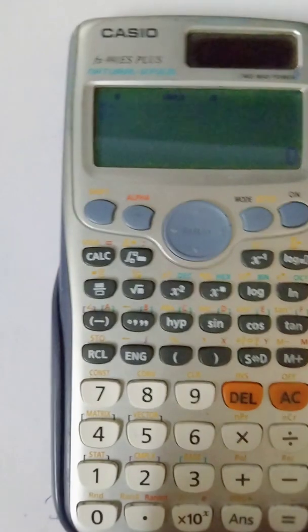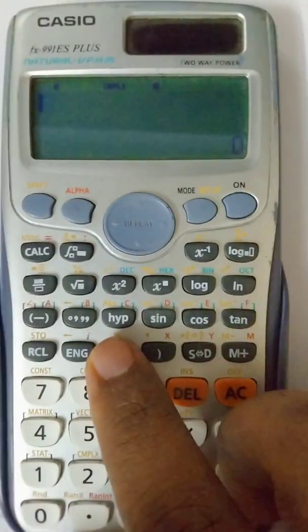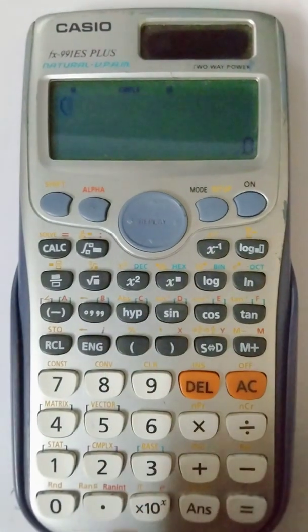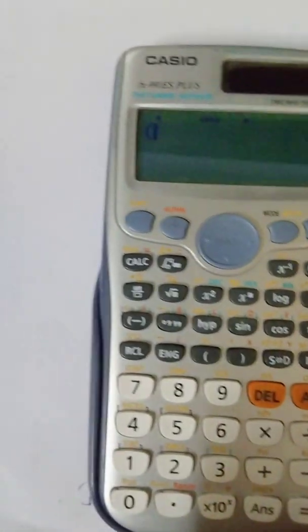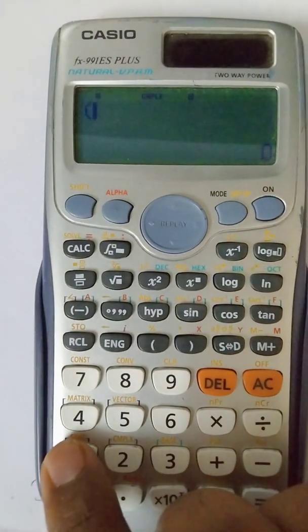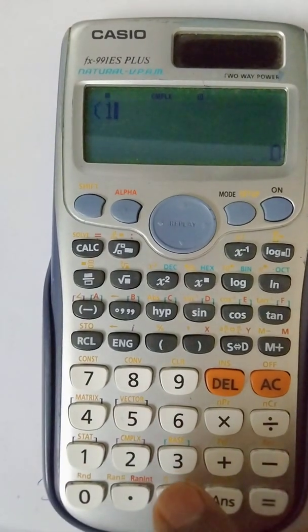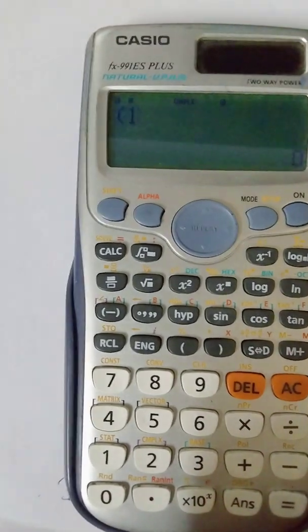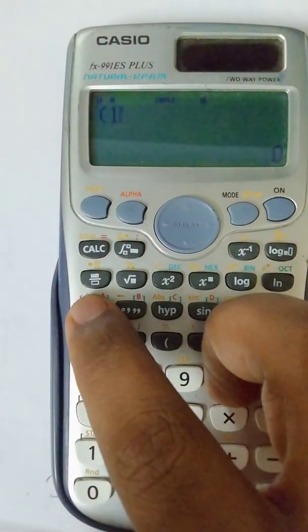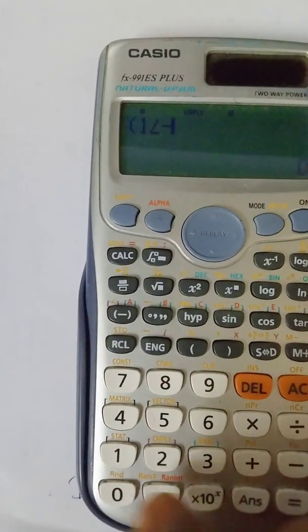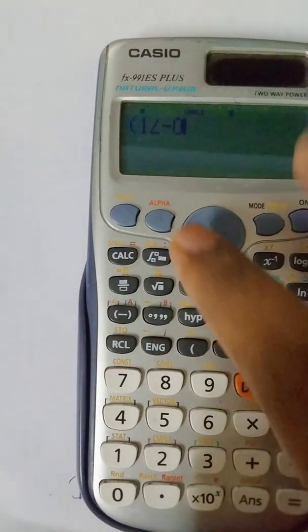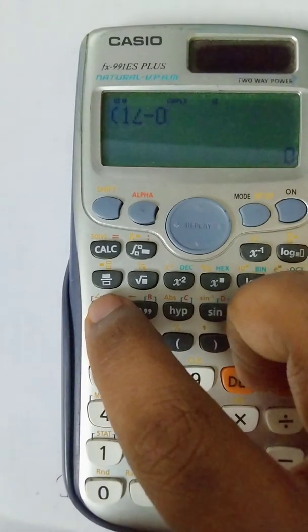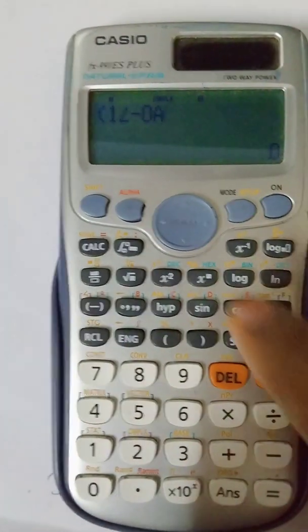Once you have done that, entering the sequence for calculating the DFT is very easy. Just open the braces, normal braces, and enter the sequence - that is the first X of 0, which is 1, and then click on shift, click on shift and then click on angle minus 0 alpha, and click on the same value as A3.